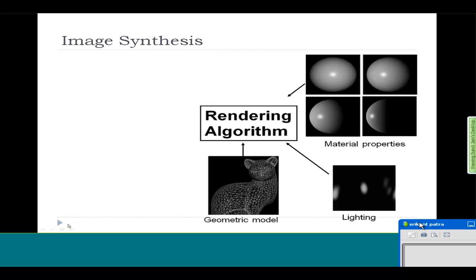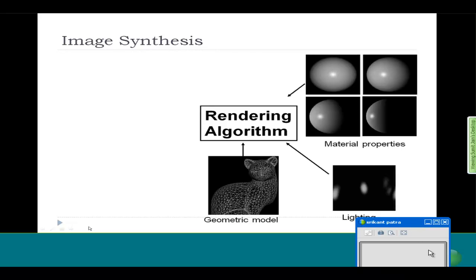Once we have all this, we pass this information to a rendering algorithm. What does rendering mean? Rendering is a term used to define the process of gathering all these physical models and material properties and then forming an image out of it.